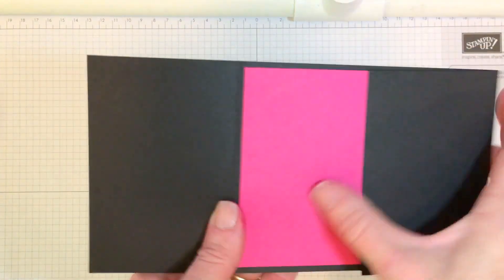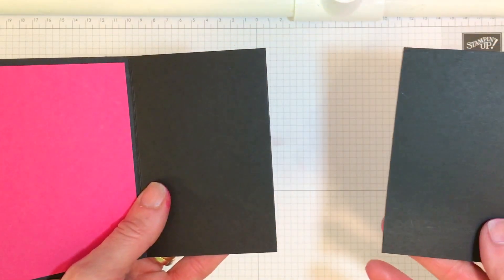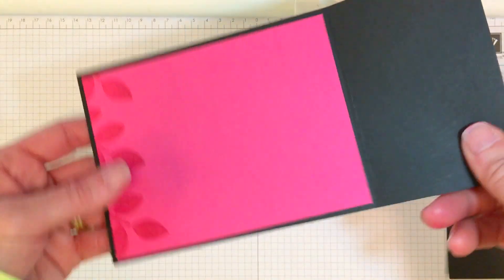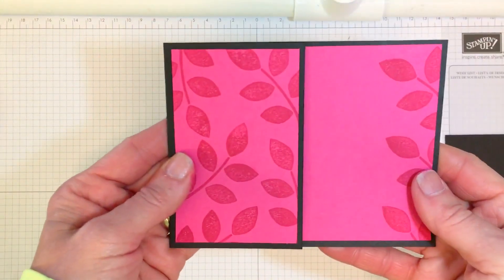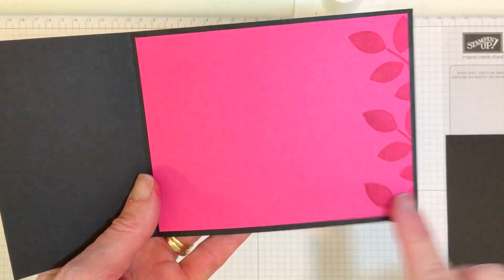Then you're going to cut off 2 3⁄4. See how this part comes off? I'm going to place that over there. I'm going to fold my card. So I've got my little flap.